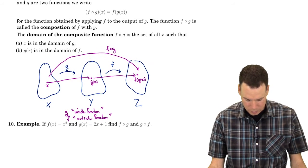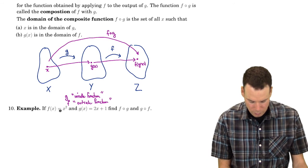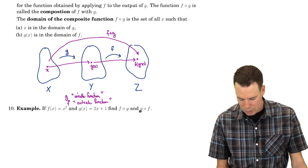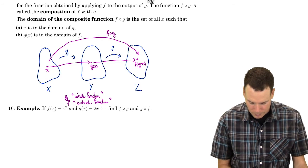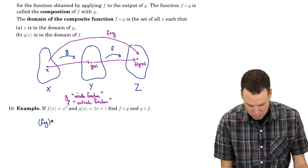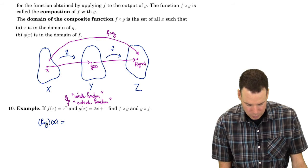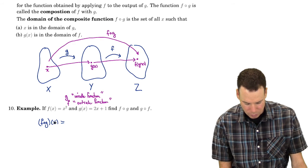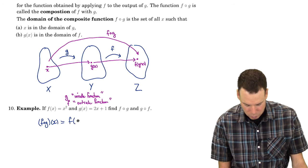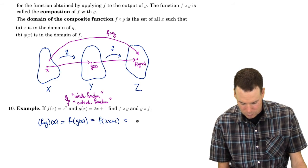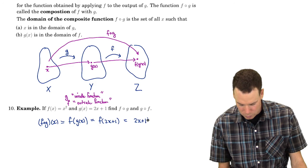Let's look at an example. If f of x is x squared and g of x is 2x plus 1, let's find f composed with g and g composed with f. For f composed with g of x, we read right to left: the function name closest to the variable gets applied first. So g gets applied first — g of x is 2x plus 1 — and that gets plugged into f, which is the squaring function.